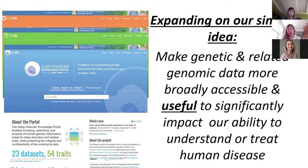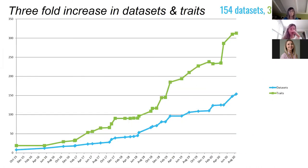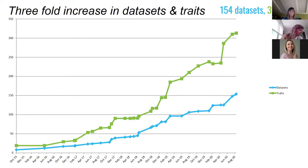You can also bounce right back out to the common metabolic disease knowledge portal and see them all integrated together. What's really lovely about this is that our data footprint has increased threefold in the last two years. In August of 2018, we only had 47 datasets and 73 traits. Last year at this time, we had 81 datasets and 173 traits. Today, we have 154 datasets across 313 traits.